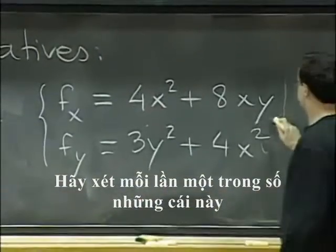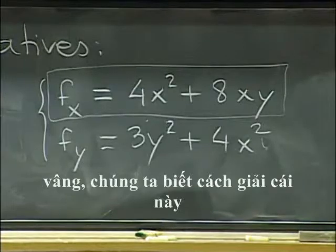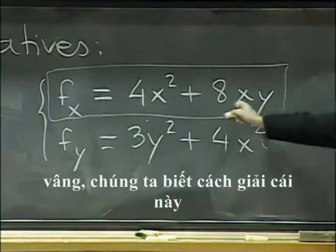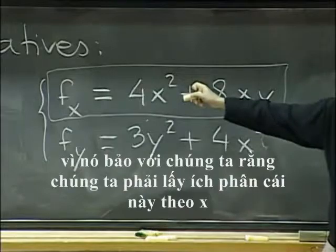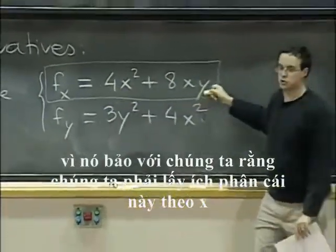And f sub y is 3y squared plus 4x squared. So let's just look at one of these at a time. If we look at this one, well, we know how to solve this because it's just telling us we have to integrate this with respect to x.